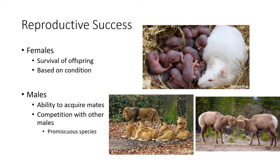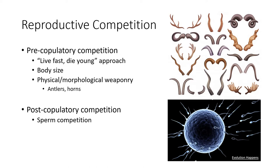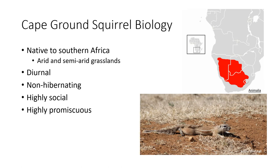This leads to the topic of reproductive competition, which can be divided into pre- and post-copulatory tactics. Pre-copulatory tactics often occur in polygynous species, where males compete through the development of large body sizes or weaponry like antlers or horns to acquire mates. Meanwhile, polyandrous species are more likely to rely on post-copulatory sperm competition, as the female will mate with multiple males.